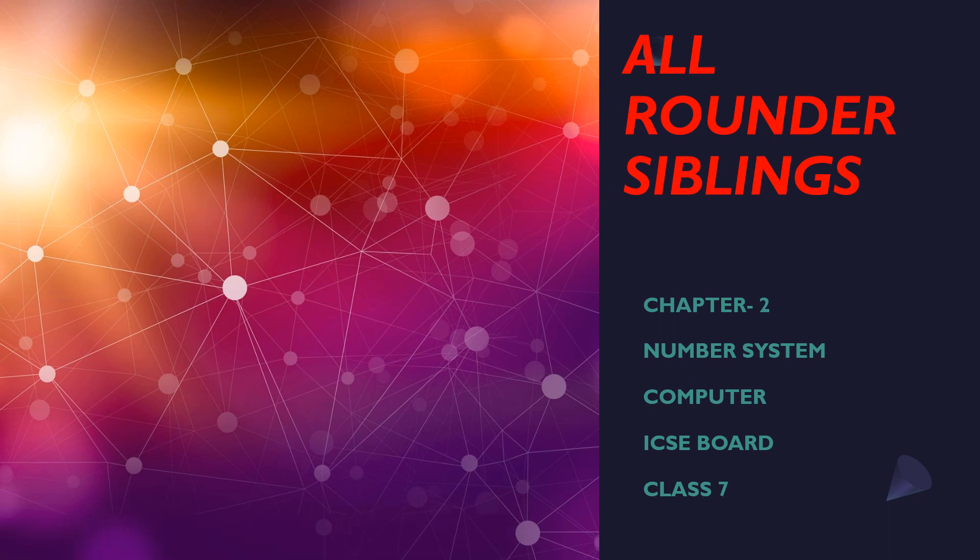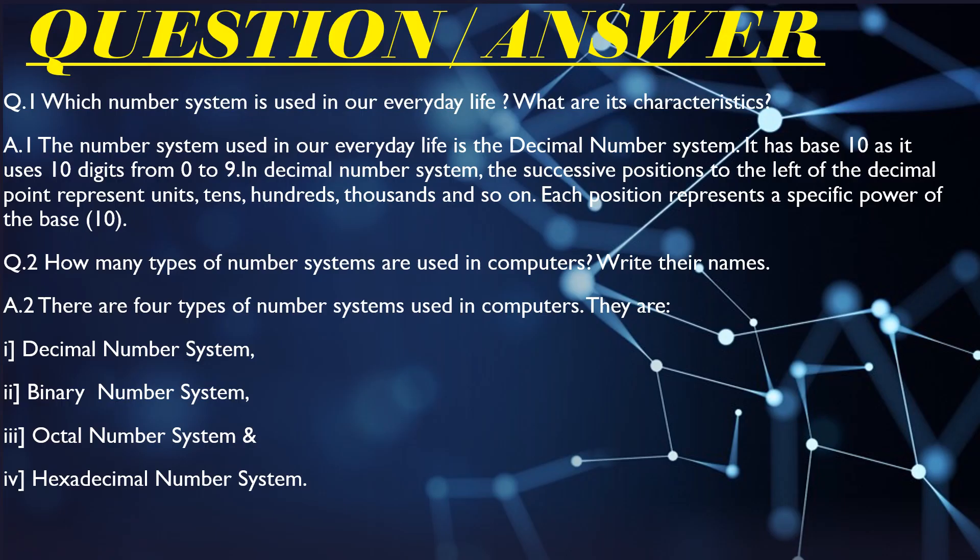Hello everyone, welcome to Allrounder Siblings. You all know that in the last lecture we have completed chapter number 2. We have completed the number system, computer ICC board class 7th. We have covered exercises in this lecture and we have to do questions and answers in this lecture.